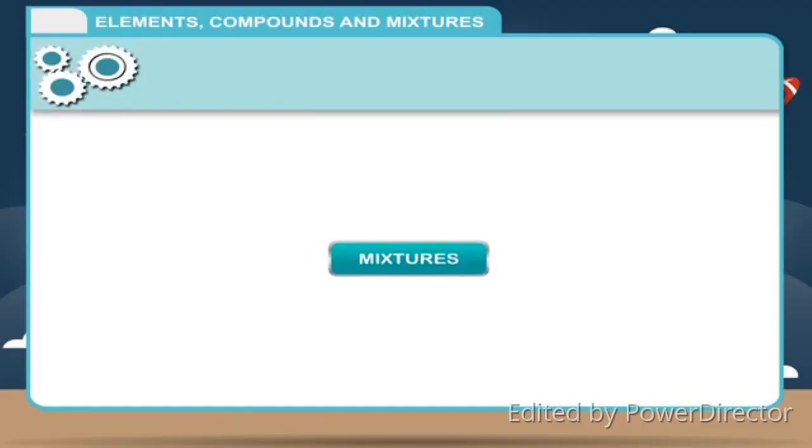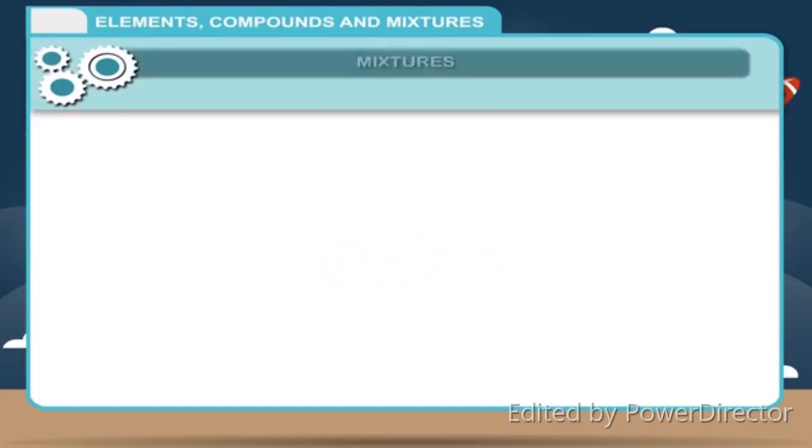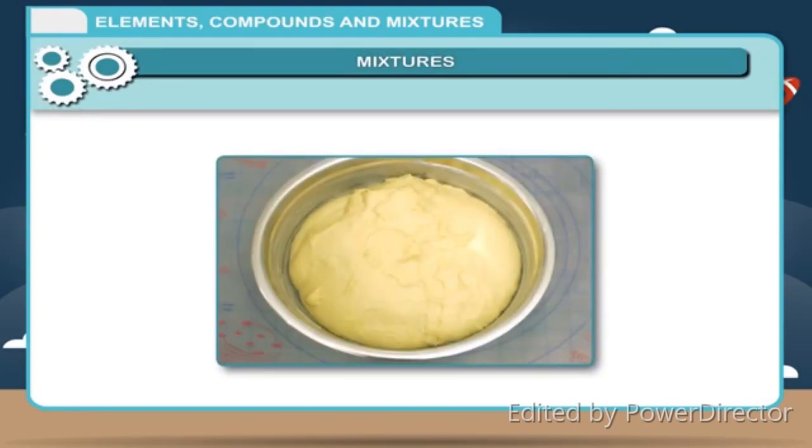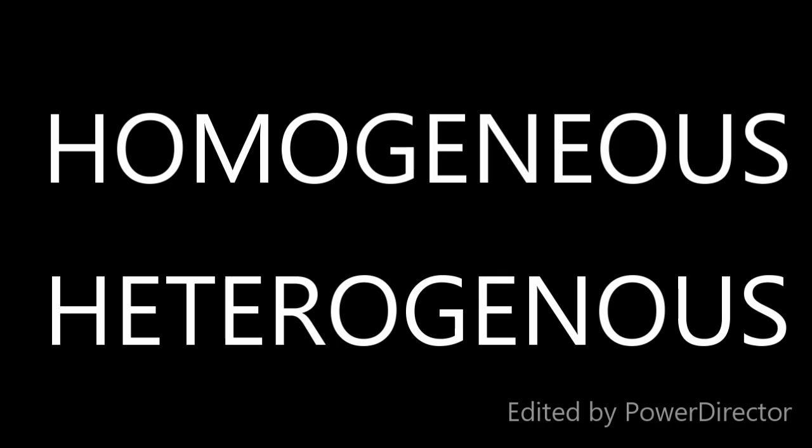Finally, we are going to discuss about mixtures. A mixture is an impure substance. It contains 2 or more substances. How do we get mixtures? A mixture can be formed by mixing 2 or more substances. Mixtures are classified into 2: homogeneous and heterogeneous mixtures.